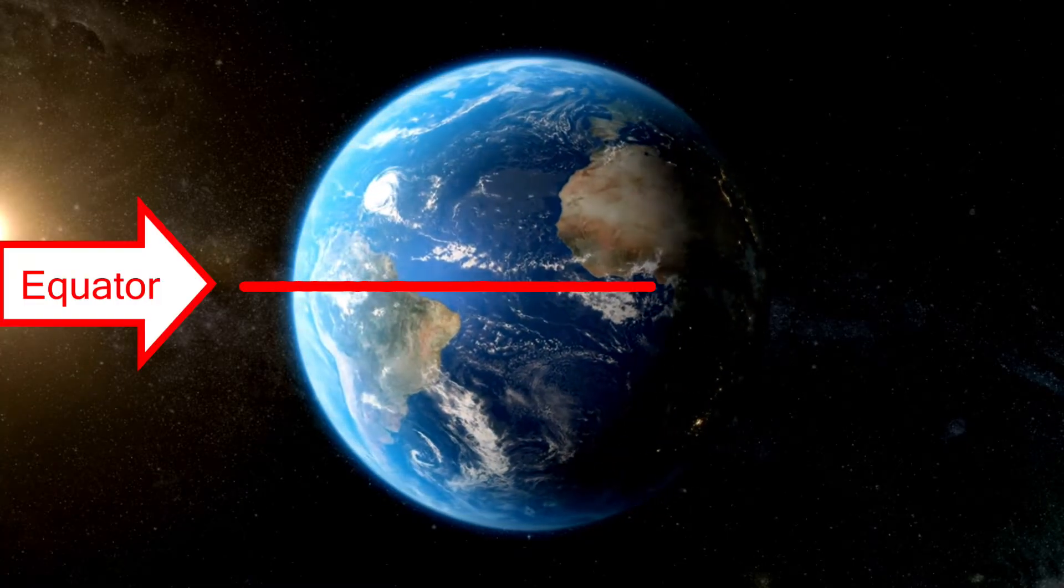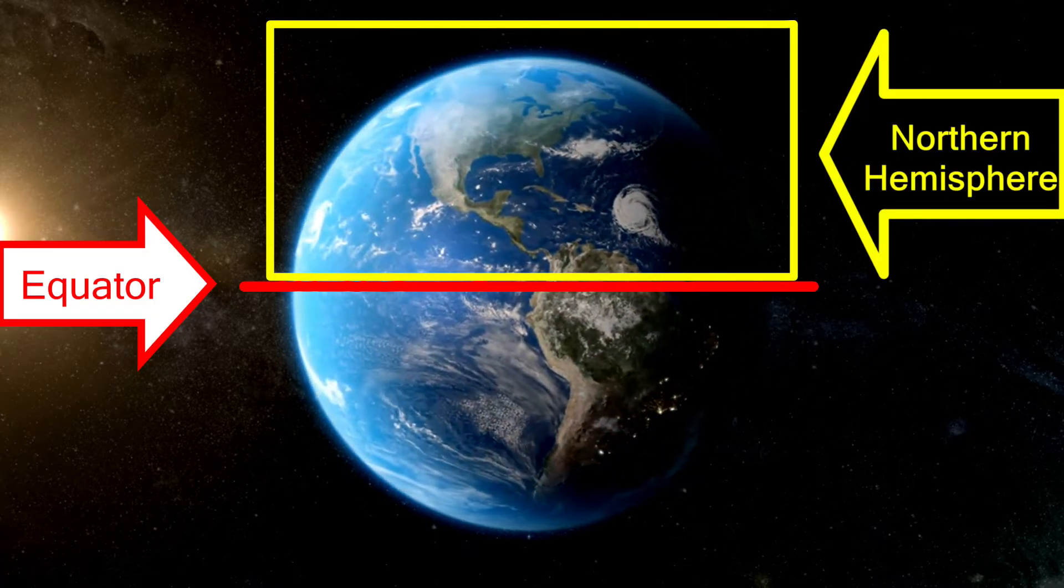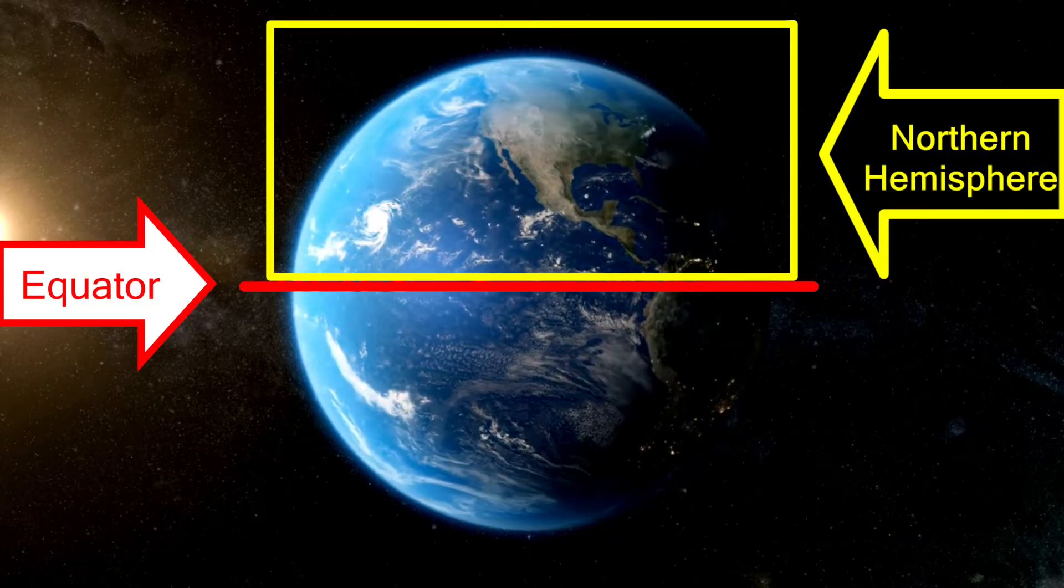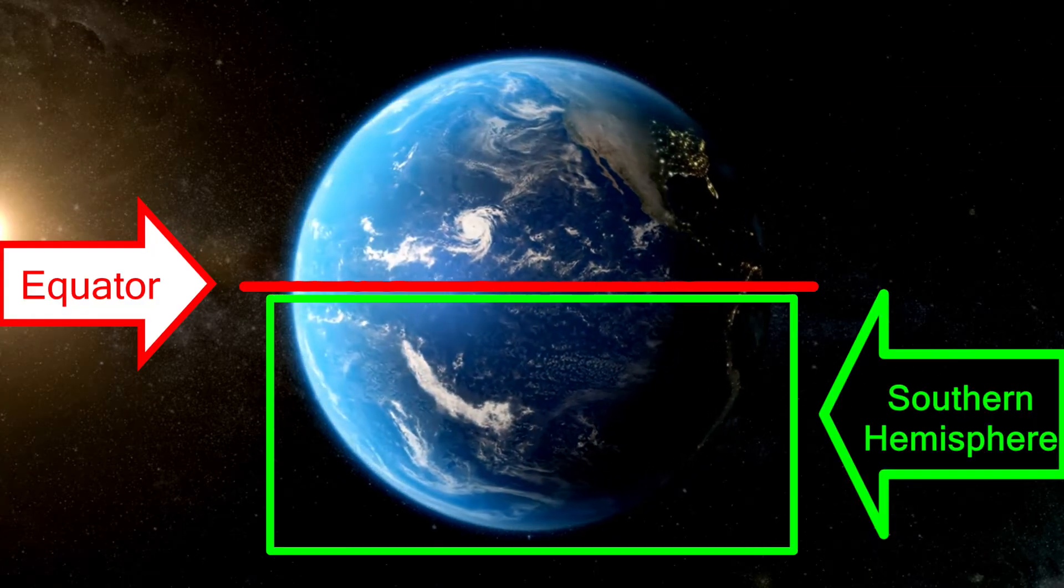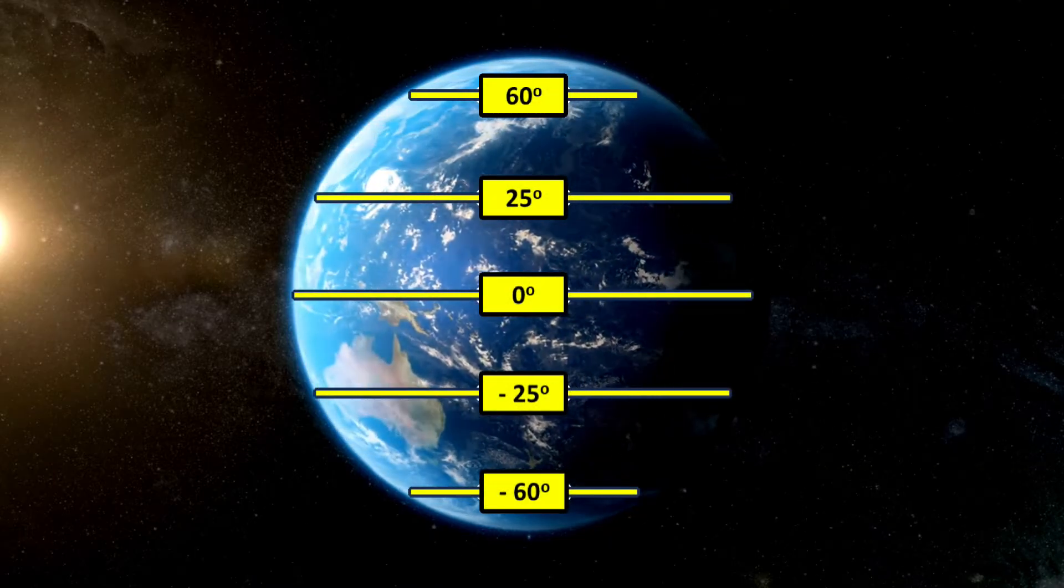Everything above the equator is called the Northern Hemisphere. For example, the entire continental US is above the equator, so it's in the Northern Hemisphere. Everything below the equator is called the Southern Hemisphere. Those also have lines of latitude between the equator and the South Pole.